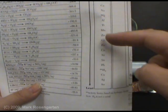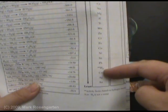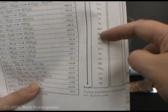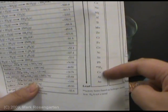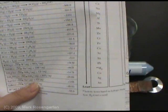According to reference table J, zinc is a much more active metal than copper is. Therefore, zinc should be able to replace copper in a copper compound, but copper should not be able to replace zinc in a zinc compound.